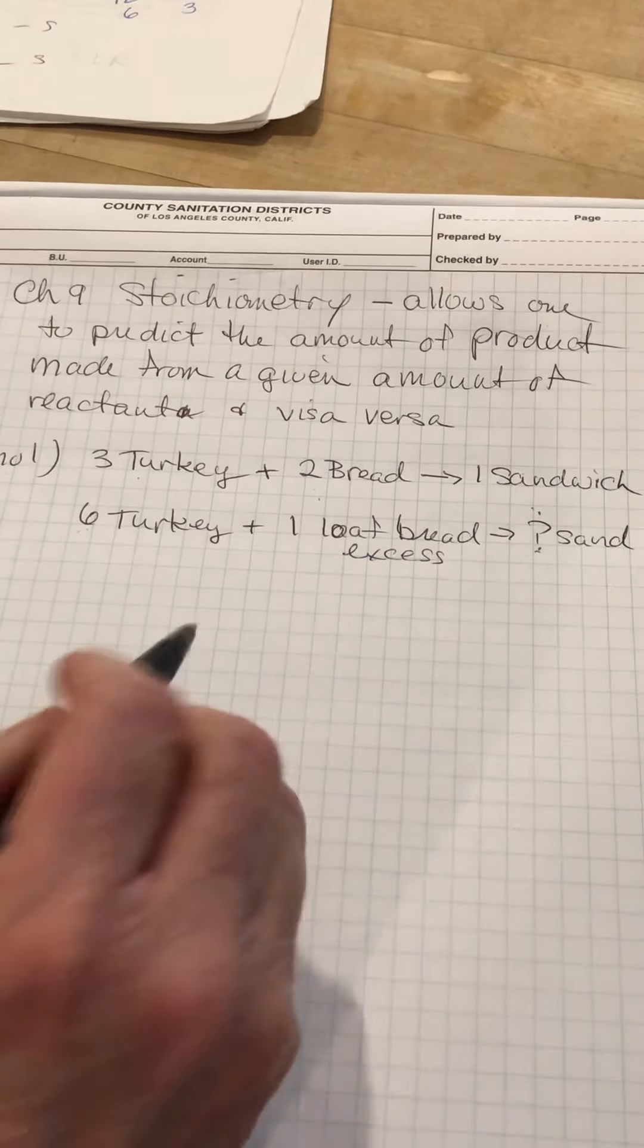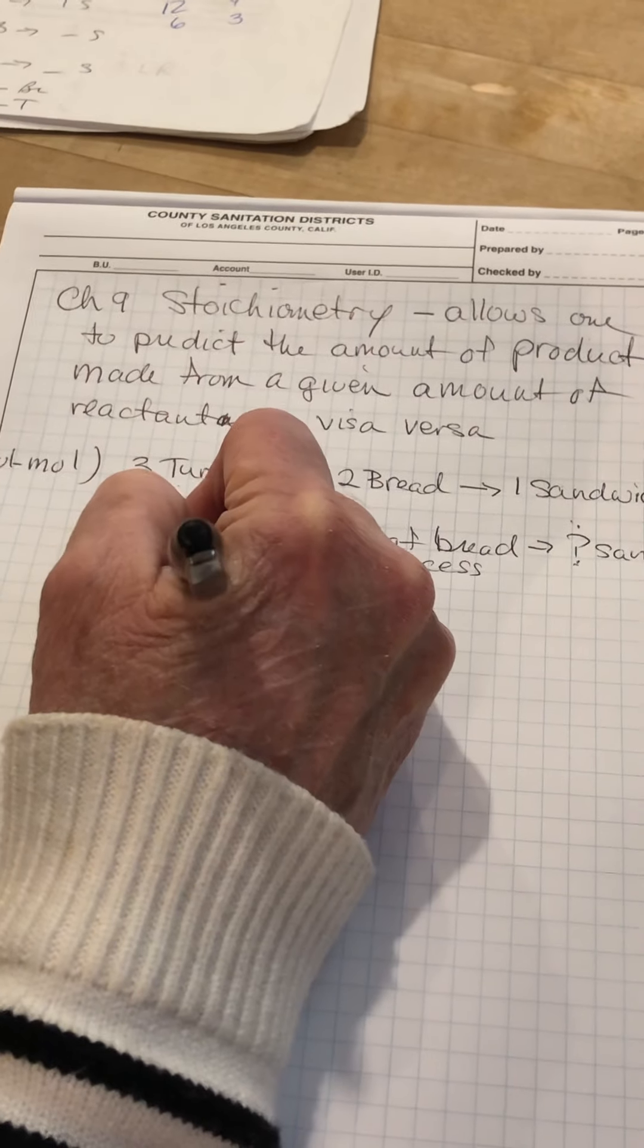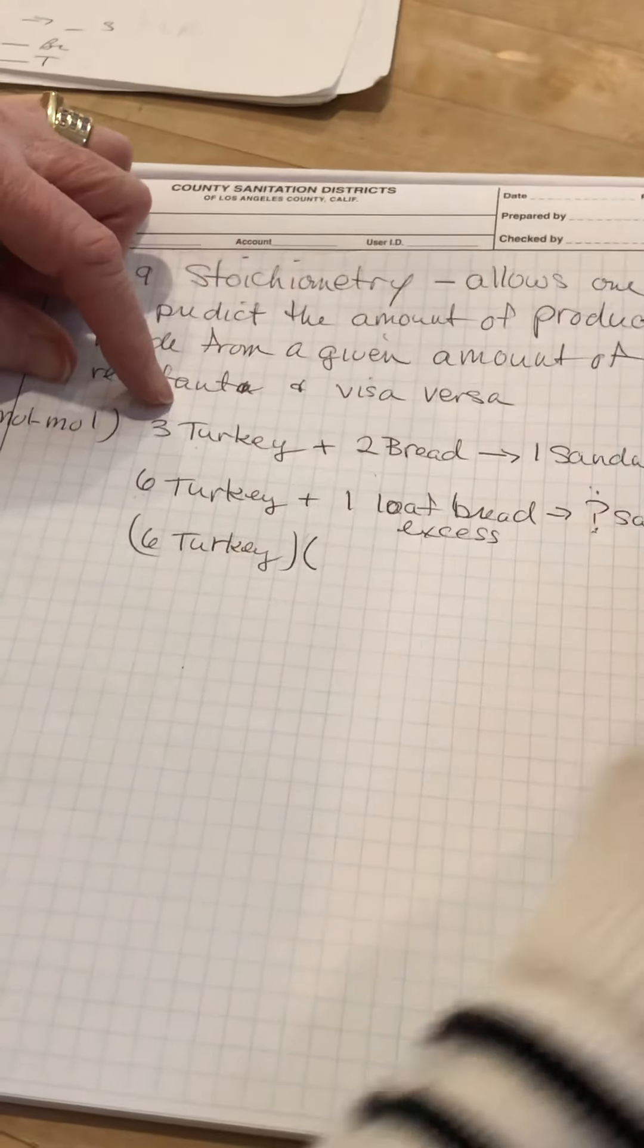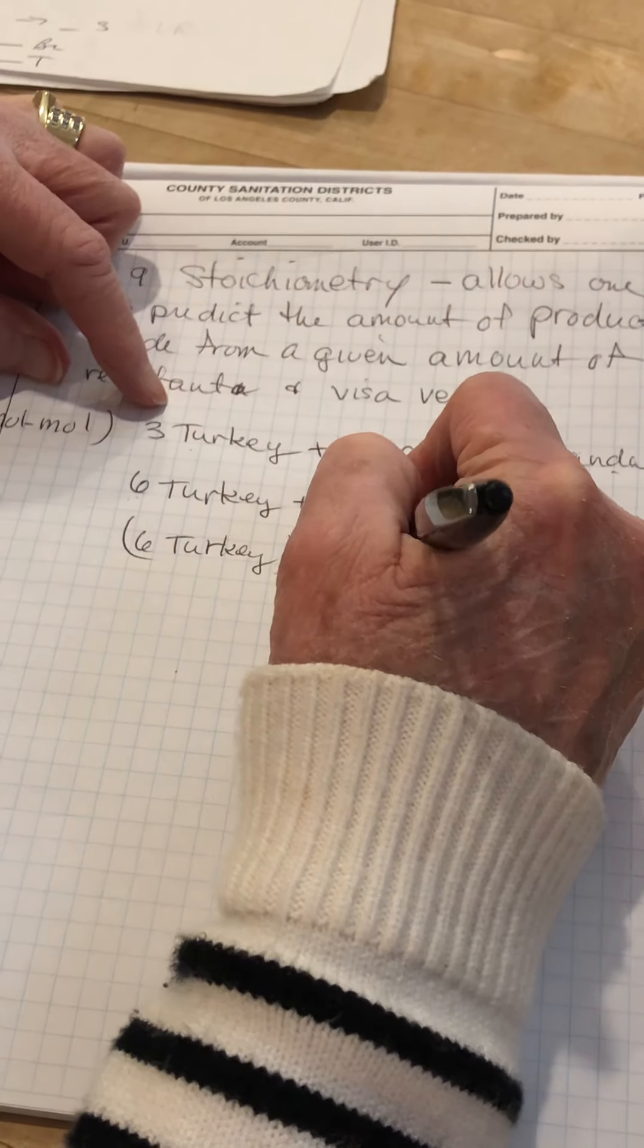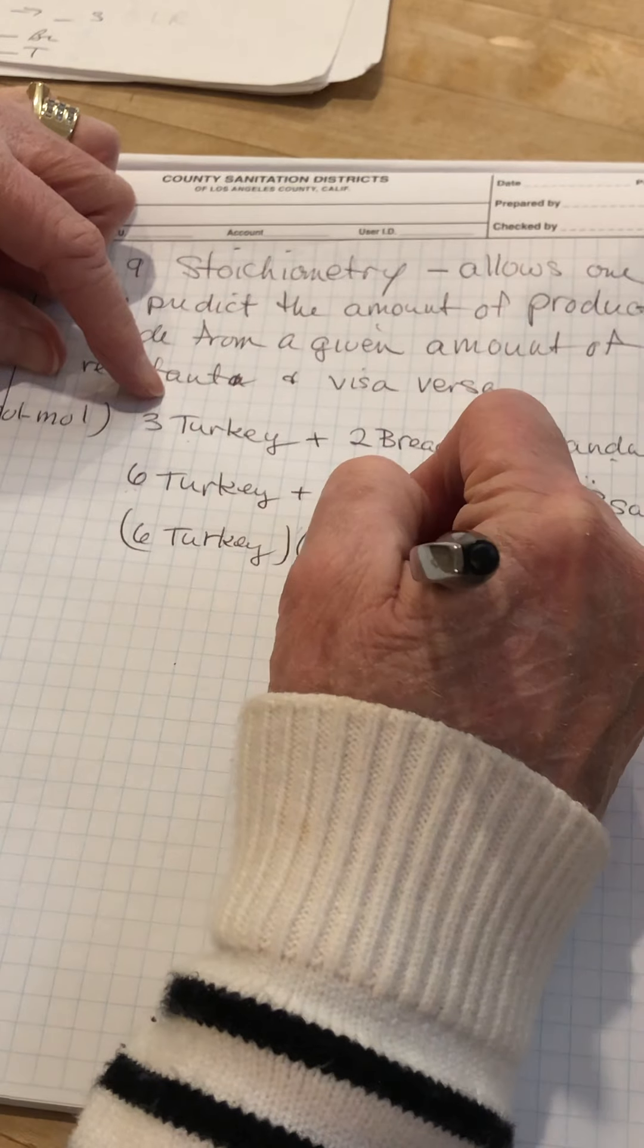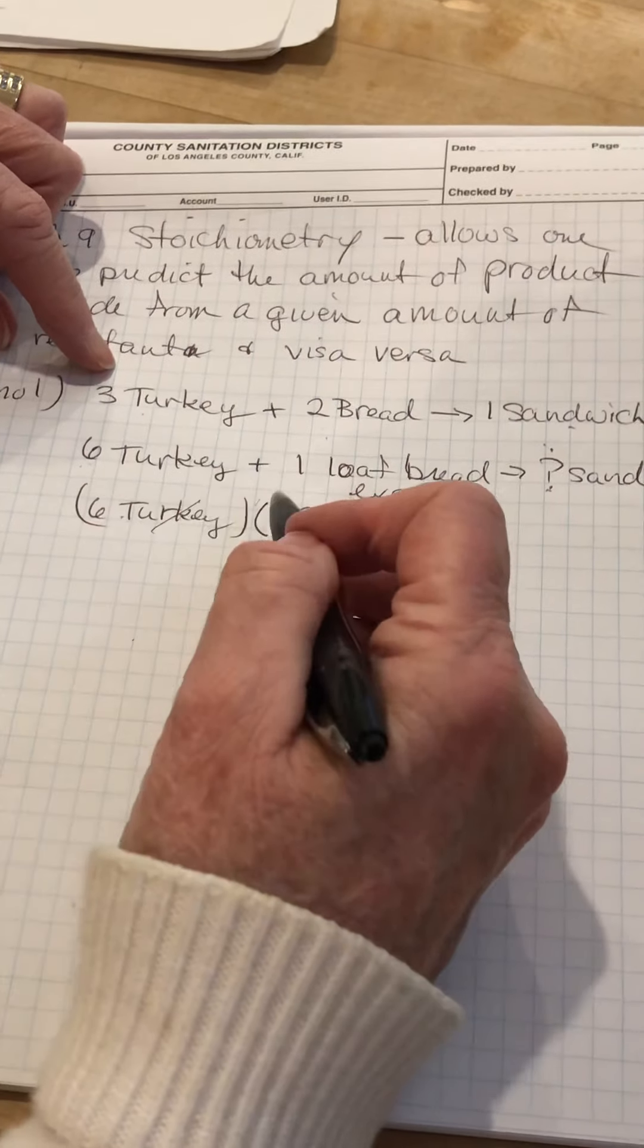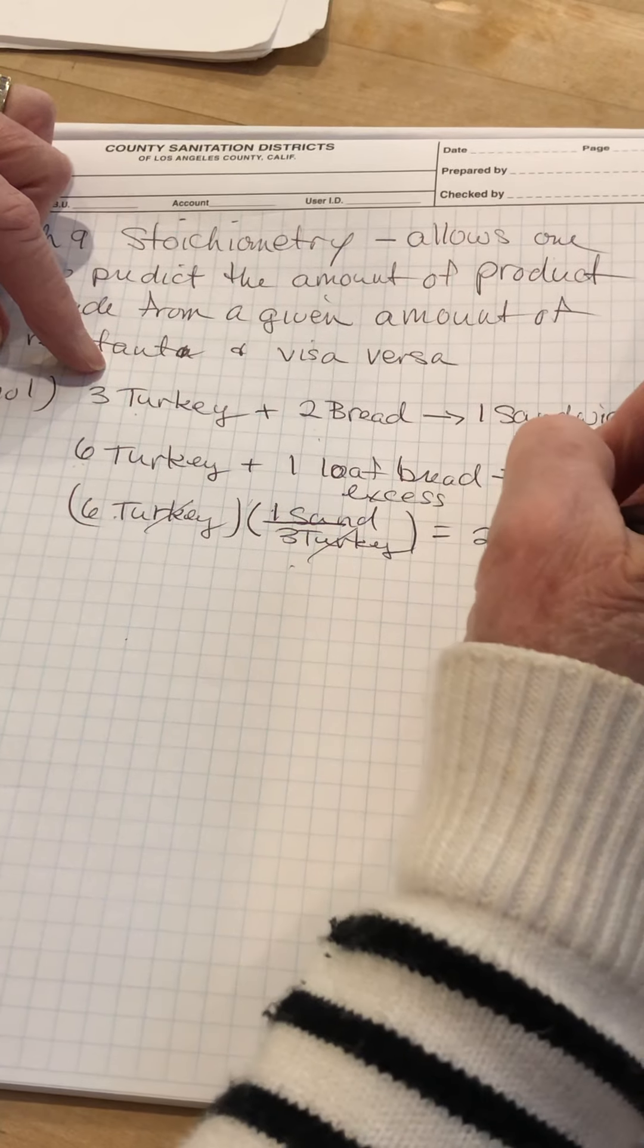But how do we do that if that was a chemical? We'd write down the given, six pieces of turkey. And we would look at the ratio you get from this balanced equation up here. We always put the thing we're looking for on the top, which is one sandwich. And it takes three slices of turkey to make one sandwich. Six, oh, let me see. The units of turkey will cancel. Six times one is six. Six divided by three is two. And we get two sandwiches.